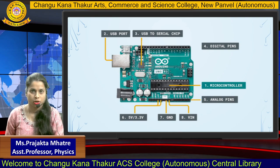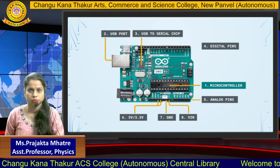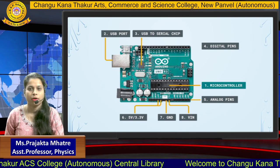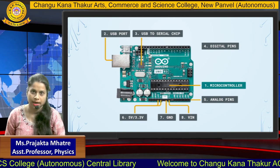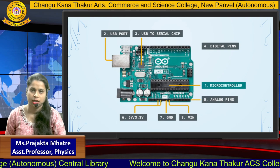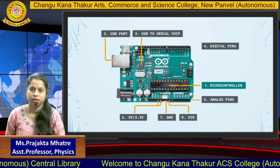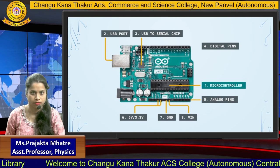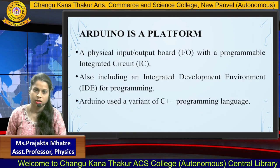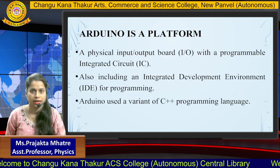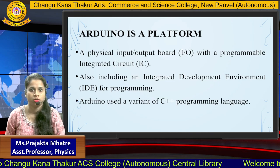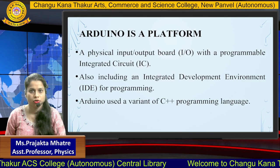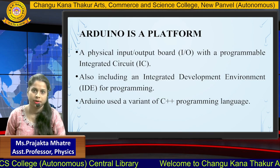This microcontroller also contains eight analog pins starting from A0 to A7. It has a USB port which is used to supply power and helps to power up the Arduino board. It also has a USB-to-serial chip and a crystal oscillator with a 16 MHz frequency. Arduino is an input-output board with a programmable integrated circuit, including an integrated development environment for programming.